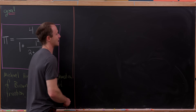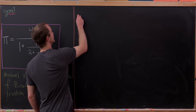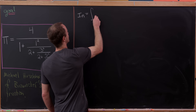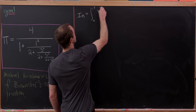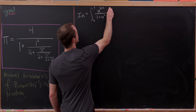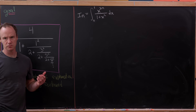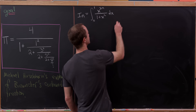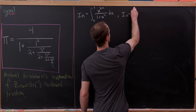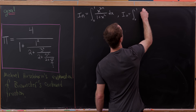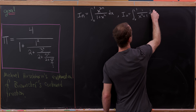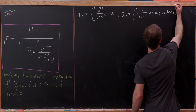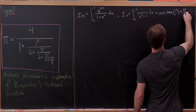Let's get started with our derivation, which will involve a certain integral. We'll call it I sub n, and it'll be the integral from 0 to 1 of x to the 2n over 1 plus x squared dx. So let's calculate the first couple of values. I₀ is the integral from 0 to 1 of 1 over x squared plus 1 dx, which is the arctangent evaluated at 1, well known to be pi over 4.